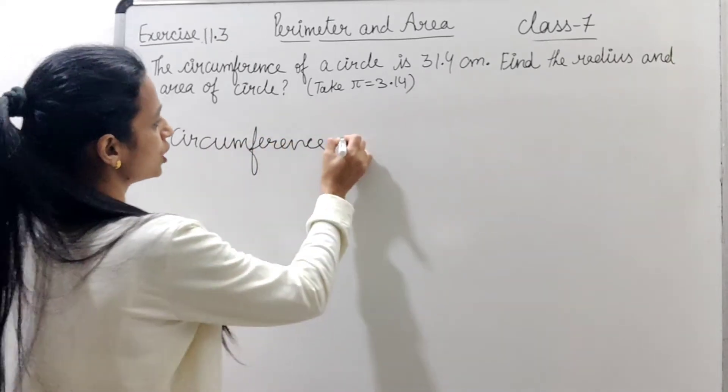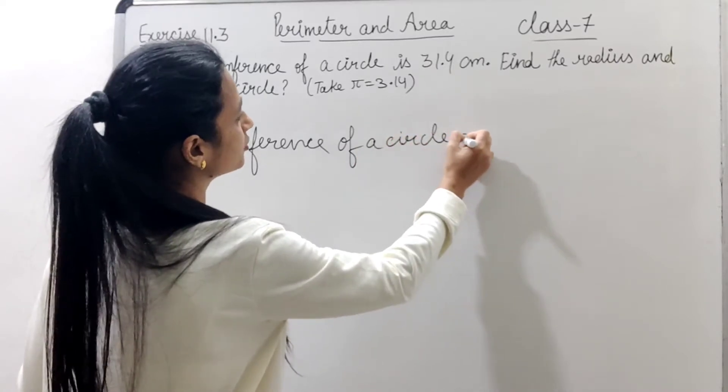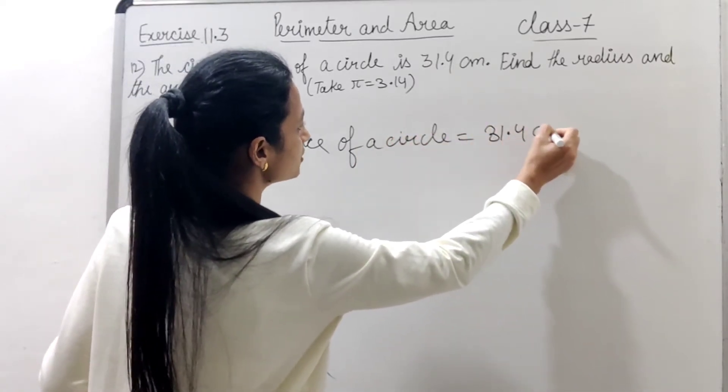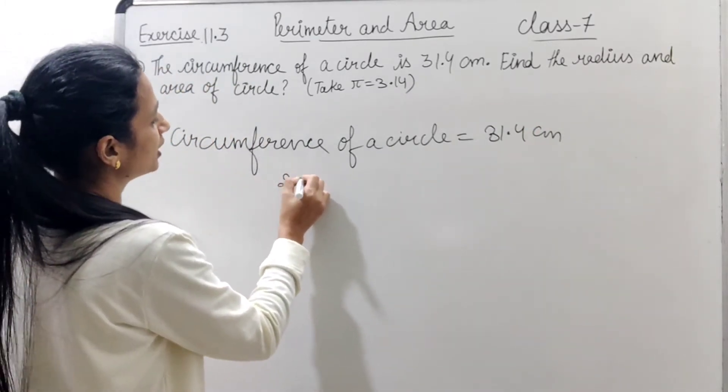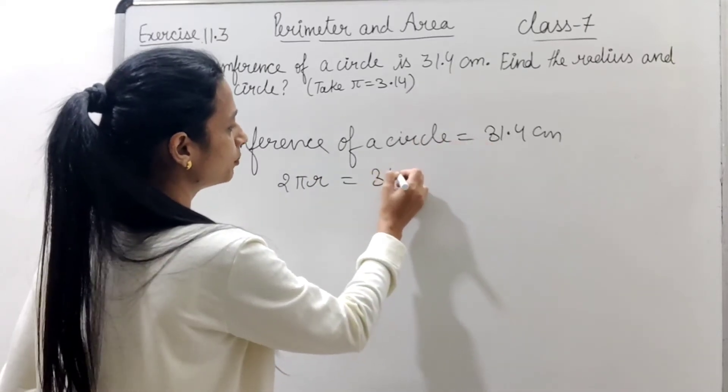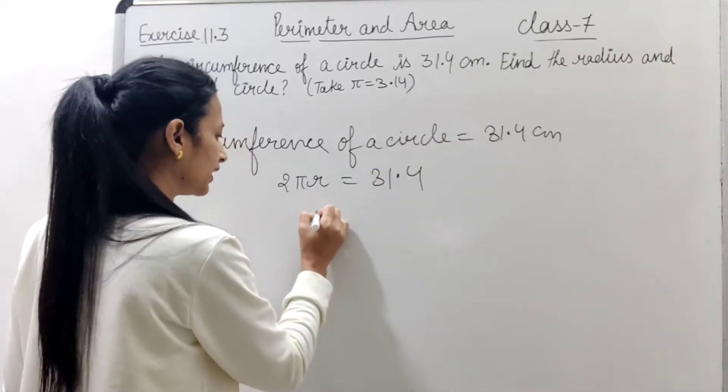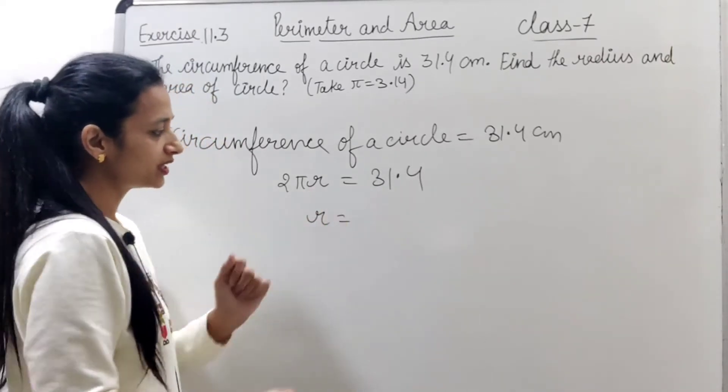Circumference of a circle equals to 31.4 cm. This is given. So the formula is 2πr equals to 31.4. Then we will find r. For r, we have 2π going to the denominator.